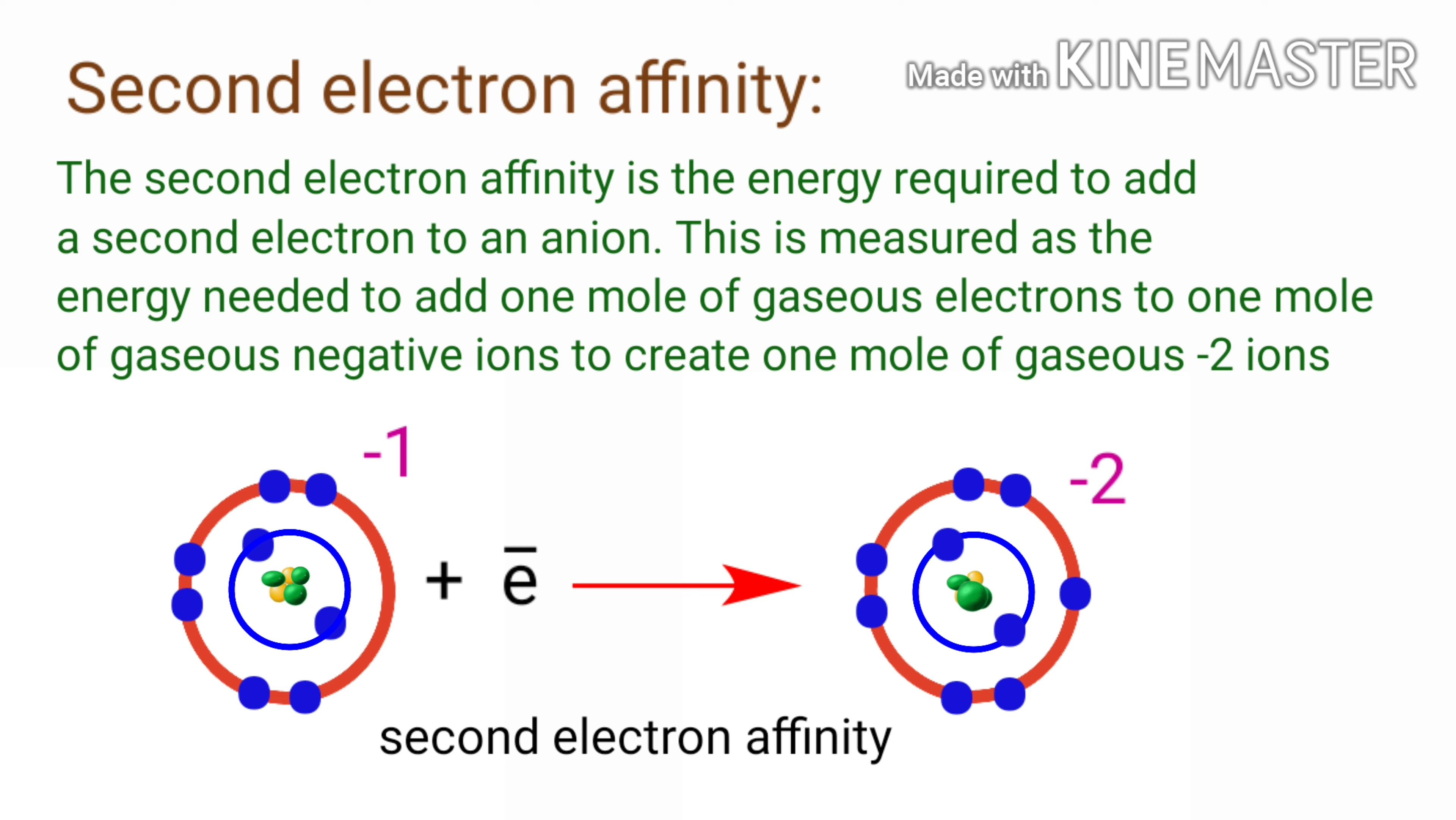The second electron affinity is a positive value as energy is needed to add a second electron to an ion with a pre-existing negative charge. This negative charge repels the incoming electron. Adding an electron is thus an endothermic process and requires energy input.